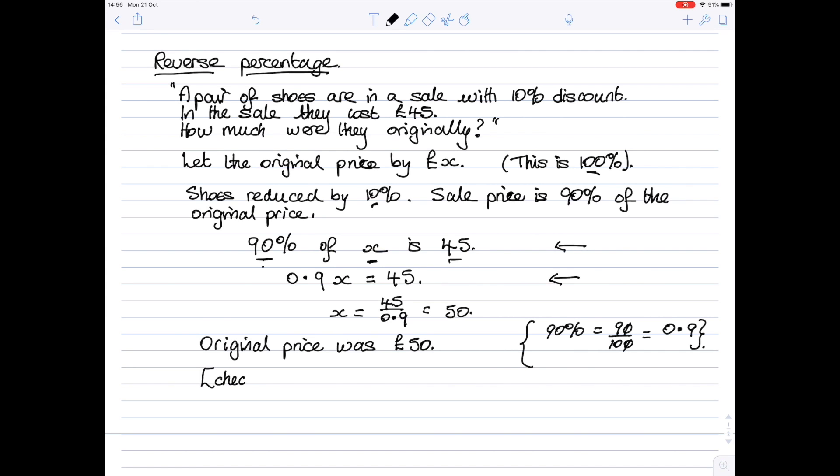You can also check, so if we do a check on our arithmetic: the shoes cost £50, they were reduced by 10%, 10% of 50 is £5. 50 take away 5 is £45, and that's what we are told they cost in the sale.